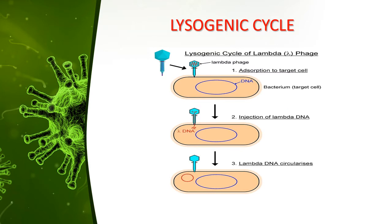In the lysogenic cycle, some bacterial phages such as lambda phage do not cause lysis and death of the host cell when they multiply. The lambda phage adsorbs to the target cell, and the phage DNA upon penetration gets integrated into the circular bacterial DNA, becoming a part of it and remaining latent or inactive. Such phages are called temperate phages, and the inserted phage DNA is called a prophage. Every time the bacterial genetic material replicates, the prophage also undergoes replication and remains latent within the progeny cell. When the host cell is exposed to UV light or certain chemicals, the phage DNA separates from the bacterial genetic material, initiating the lytic cycle.